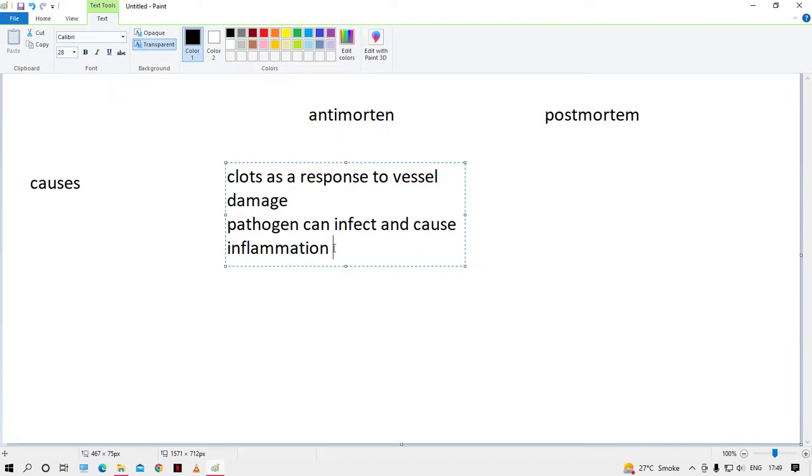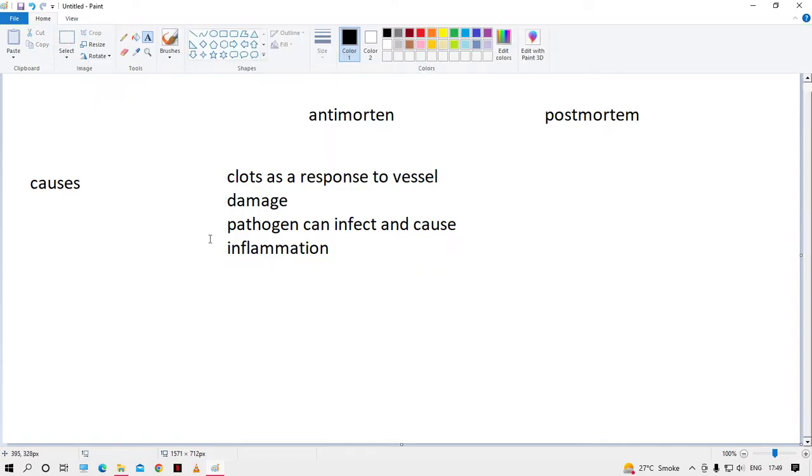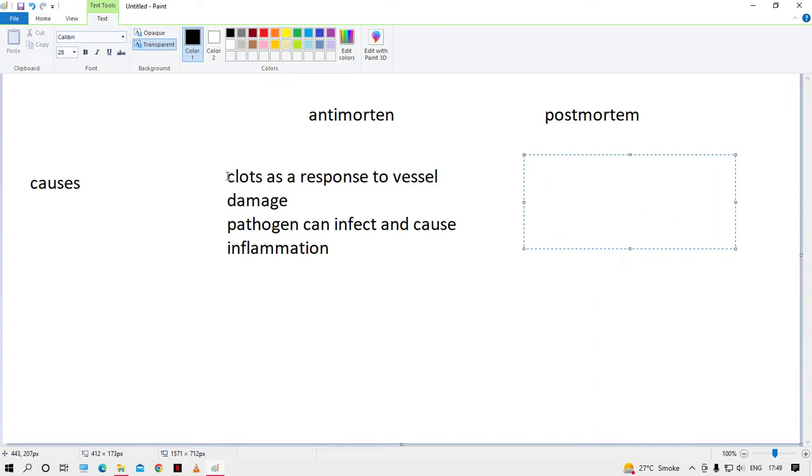At the site of inflammation, there can be formation of the clot due to damage to the endothelium there. That's the antemortem clot. For postmortem, the person is dead, so all these mechanisms are not working. Why is the clot found? The clot is found because of gravity.